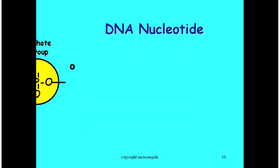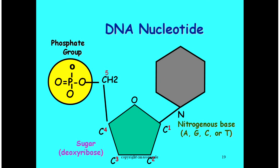Number 19 shows a single nucleotide. I'd like you to label the nitrogen base on the right-hand side. It looks like a rectangle in your picture, and notice that it has nitrogen atoms in it, hence nitrogen base. I also want you to label the pentagon as your five-carbon sugar, which is deoxyribose, and then the circle as your phosphate group. When you're ready, flip to the next page.